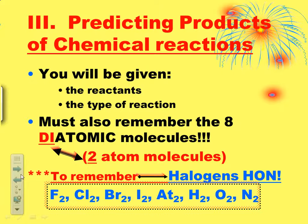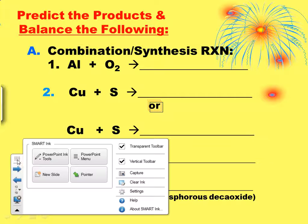So knowing these things—given the reactants, given the type of reaction, and then remembering that if you see your diatomics alone you need to put a two as a subscript—that will equip you to hopefully successfully predict your products for a chemical reaction.